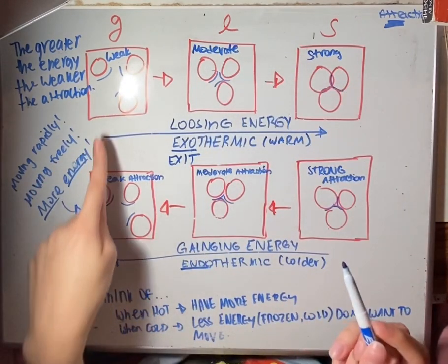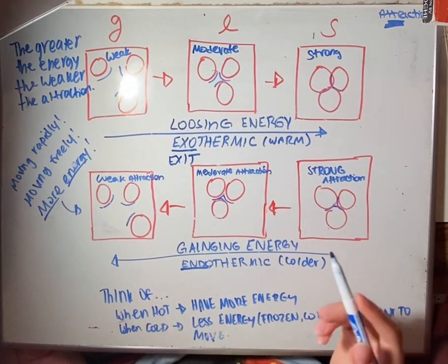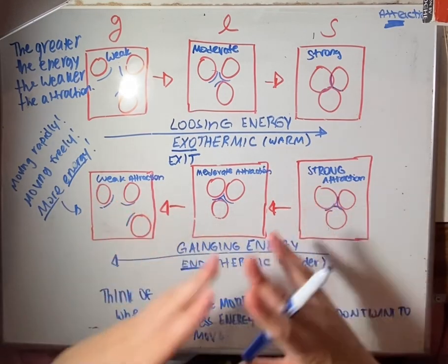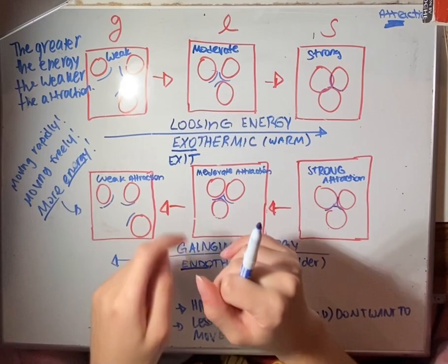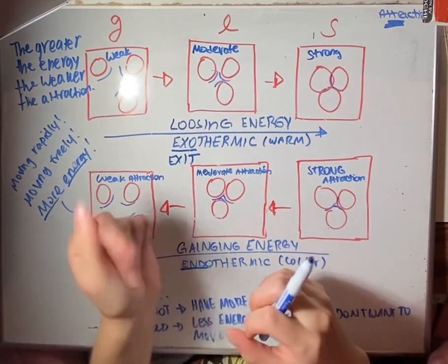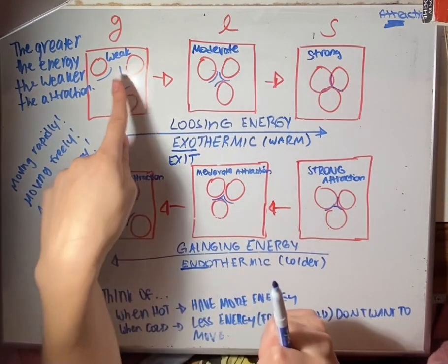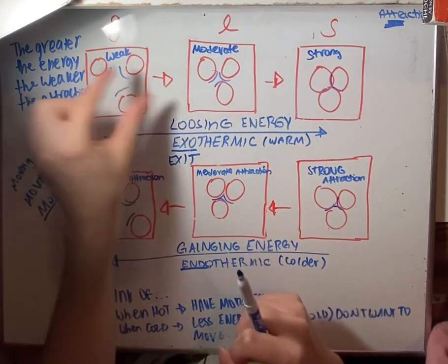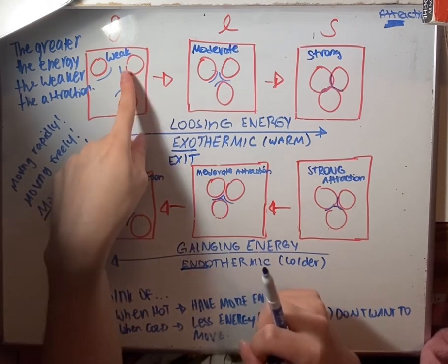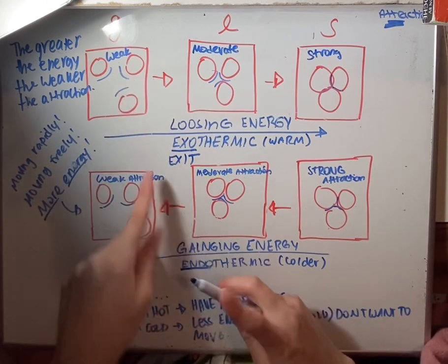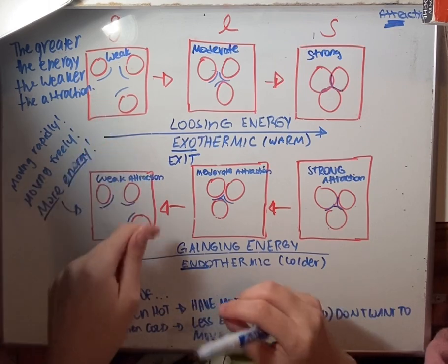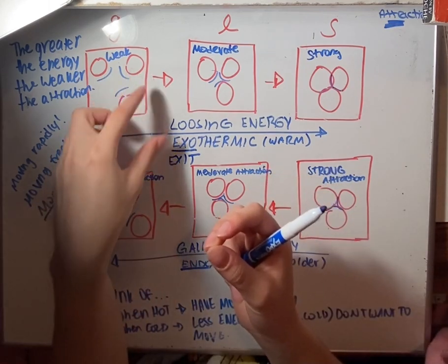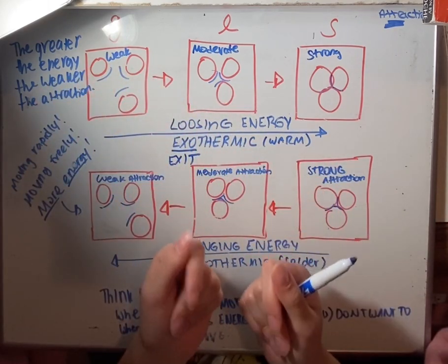That should make sense. Think of a hot summer day — you have so much energy. When you're in a big room, you're moving rapidly and freely, meaning you have more energy. That's what the particles in a gas are doing. They're moving rapidly and freely because they have a weak attraction — because they have the most energy.